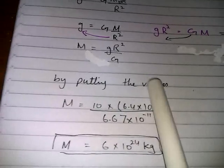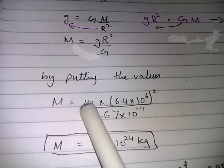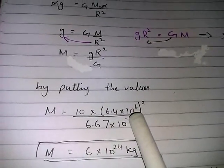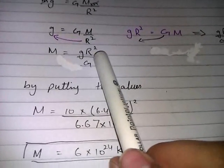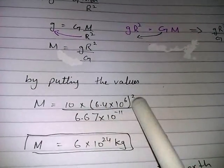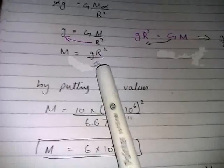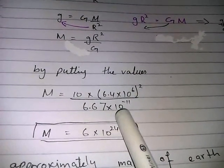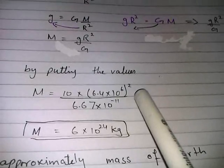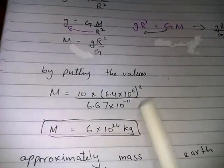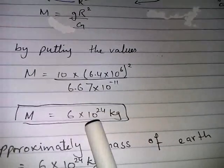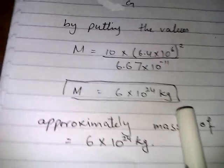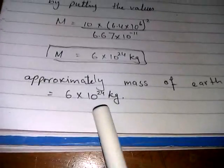Now by putting the values we get mass is equal to 10, times 6.4 into 10 raised to the power of 6 which is the radius, and as it is the square then we will take it as whole square. And it is over the gravitational constant which is 6.67 into 10 raised to the power of minus 11. Now by substituting these values the mass of Earth comes out to be 6 into 10 raised to the power of 24 kg. In the final conclusion I can say that approximately the mass of Earth is equal to 6 into 10 raised to the power of 24 kg.